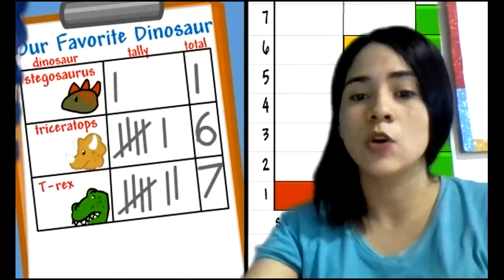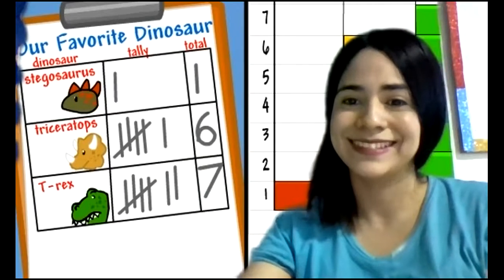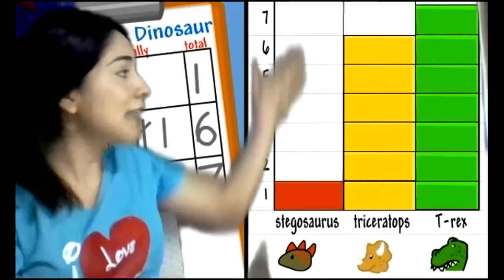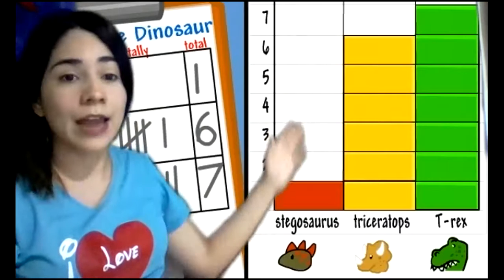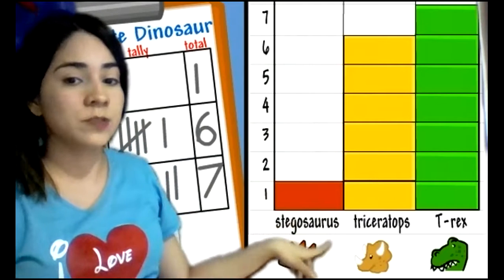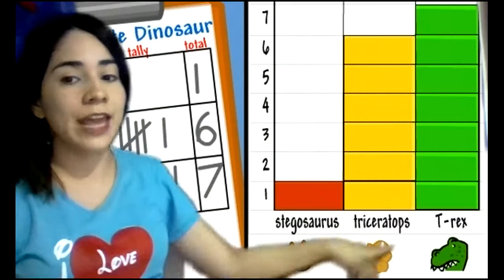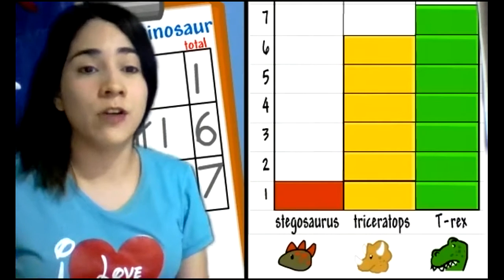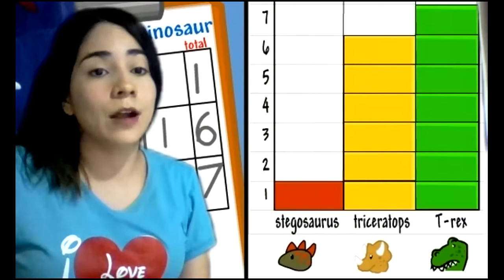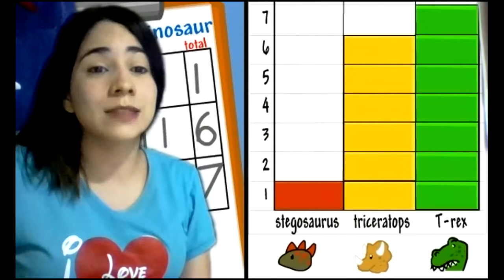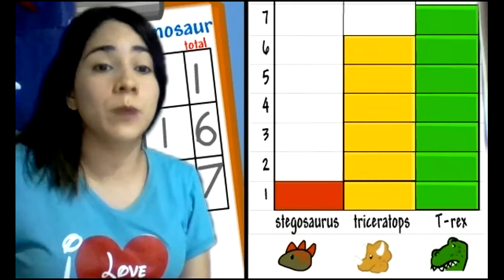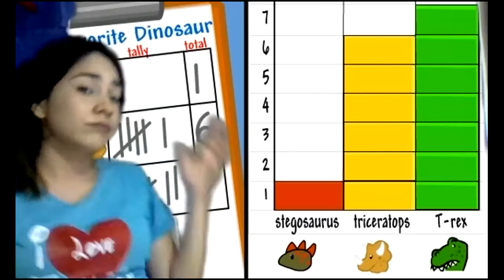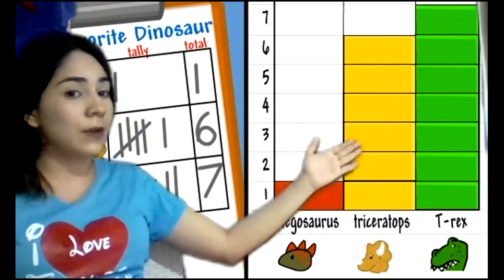Now let's go to a block graph. This is a block graph, guys. Here I can see a stegosaurus picture, a triceratops picture, and a T-Rex picture. So before you make a block graph, you have to ask some friends, people, or your family.